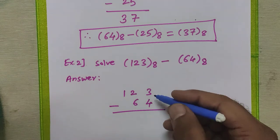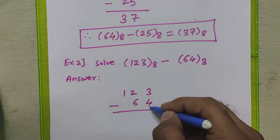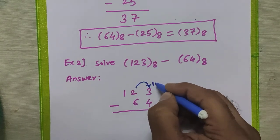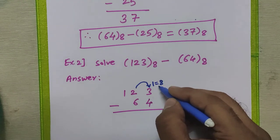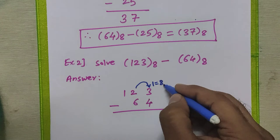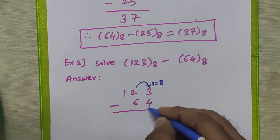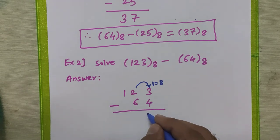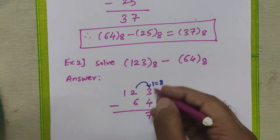First, 3 minus 4 is not possible, so we take 1 borrow from the next digit. In this system, 1 borrow equals 8 because the base is 8. So 8 plus 3 becomes 11, and 11 minus 4 is 7.